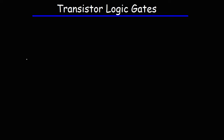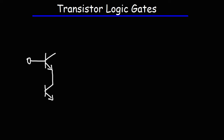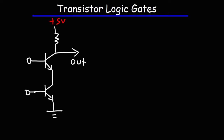So let's start with a circuit. Here we have an NPN transistor — this is the base, the collector, and the emitter. I'm going to connect it in series with another NPN transistor. We're going to have a resistor at the collector of the first one. This is going to be the output, and the second one will be connected to ground. This is going to be positive 5V. We'll call the first one input A, the second one input B. Now, what type of logic gate do we have here?